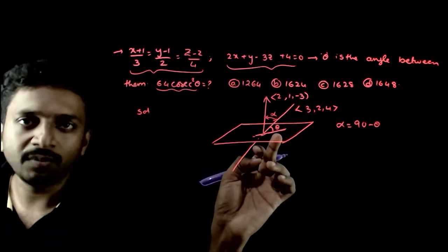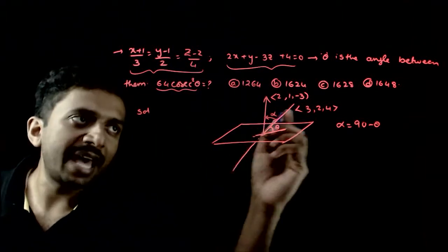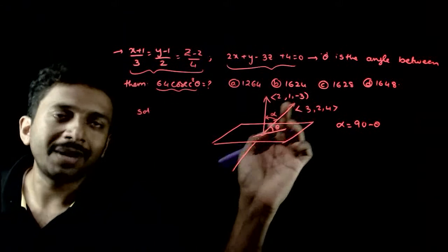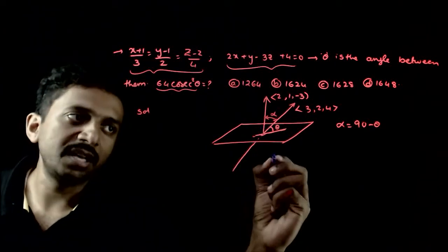Theta ko directly find karna mushkil hai. But, alpha ko find karna baat easy hai. Because, alpha is the angle between two vectors, whose drs are 2, 1 minus 3 and 3, 2, 4.